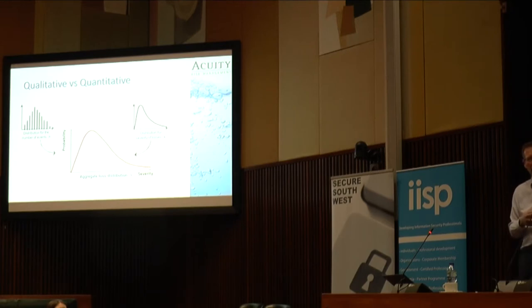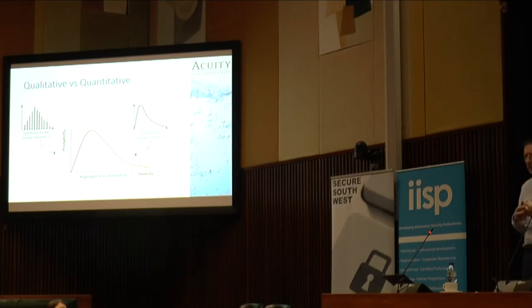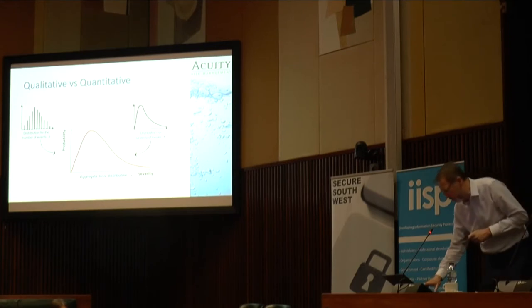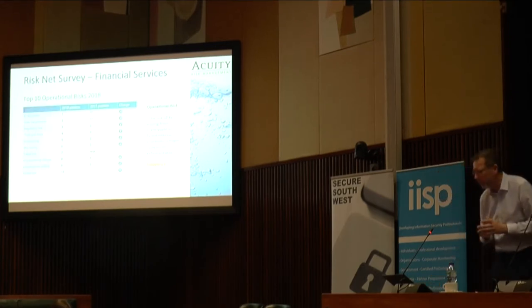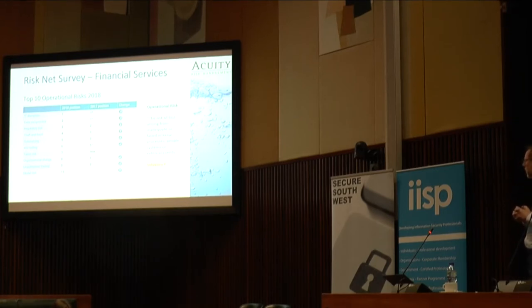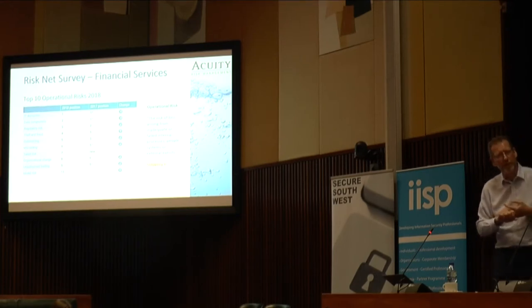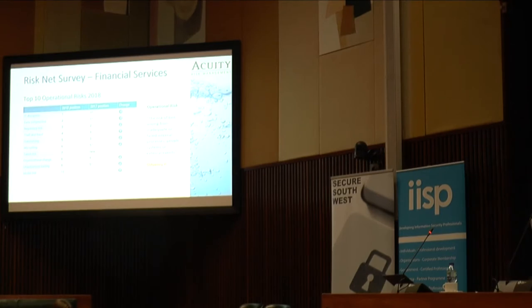The question then becomes: what do these distributions actually look like for cyber? If we had lots of data on cyber breaches we could plot the results, but unfortunately we don't have a huge amount of data yet. Comparing one incident and breach with another is difficult, and the context can vary. However, in financial services, the sector has for a long time been quantifying risk in financial terms — credit risk, market risk, and operational risk — because they must calculate the level of capital at risk and maintain reserves to cover potential losses.